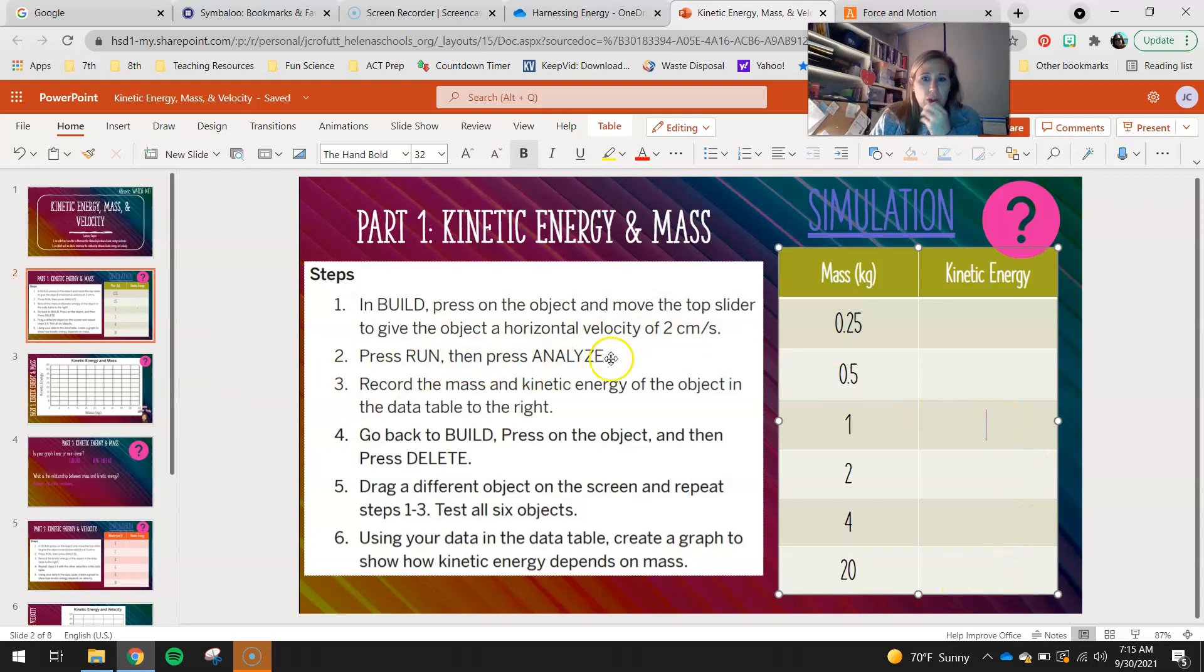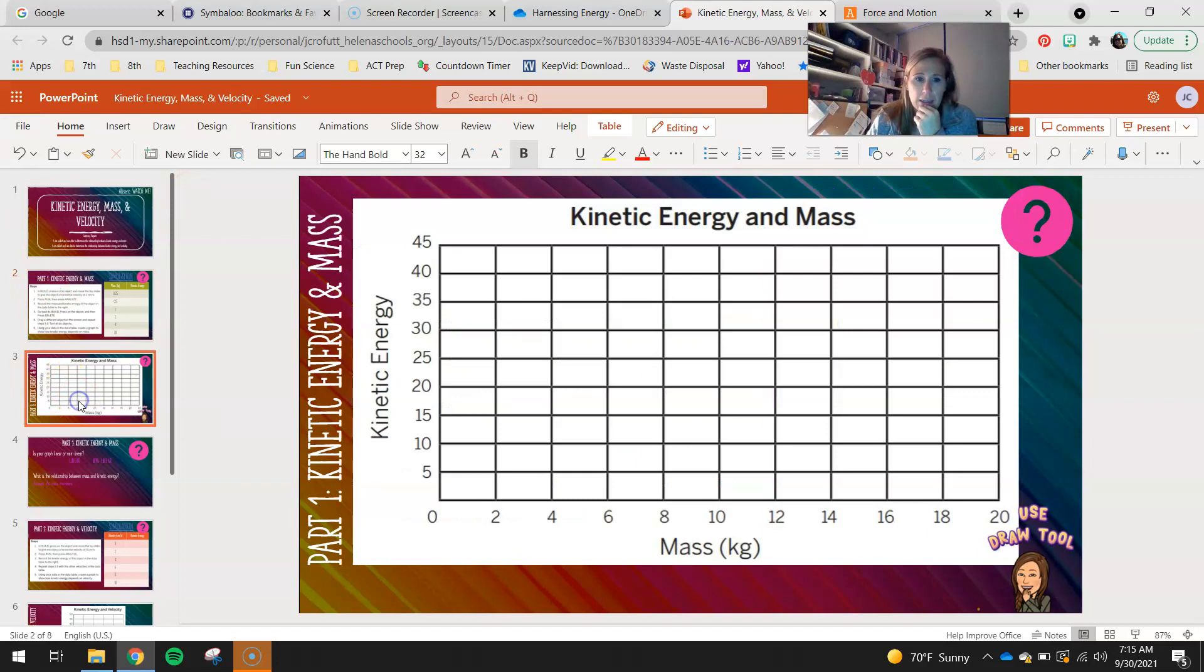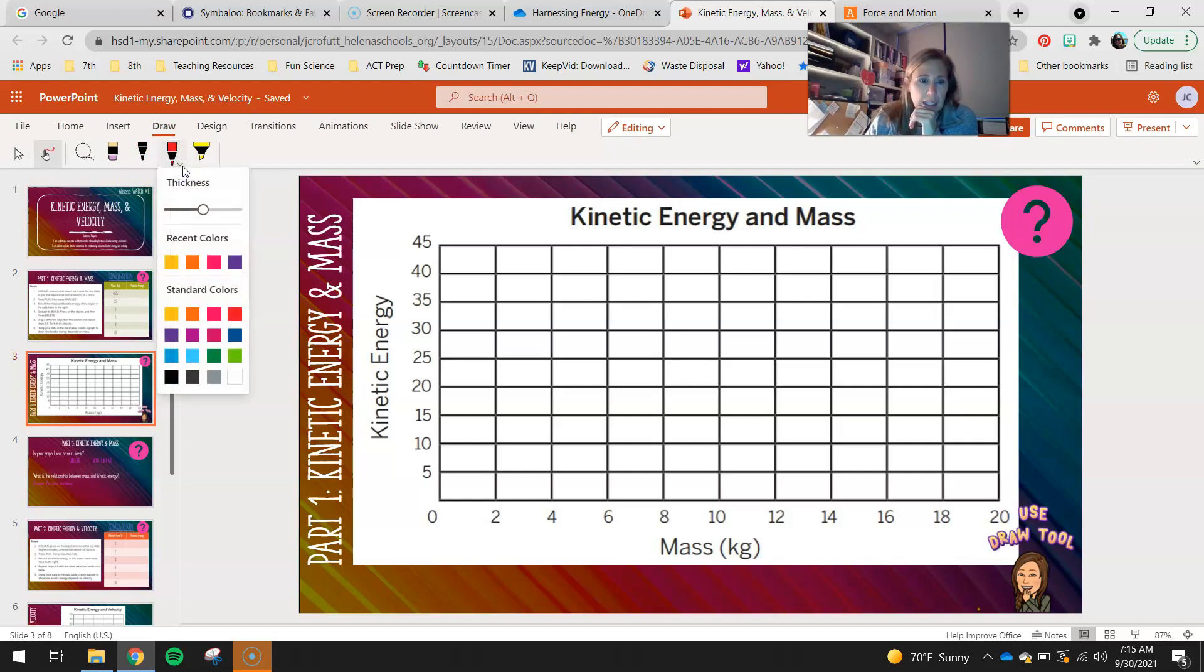And then once you guys have those seven data points plugged into the table, you guys will graph them on the next slide. So you guys will need the draw tool for this. So you guys will first grab a pen that's easy to see. I'm going to use hot pink. You guys can also change the thickness of your pen. And what I'm going to do is I'm going to say, alright, my first puck was about one gram. So in here between zero and two.